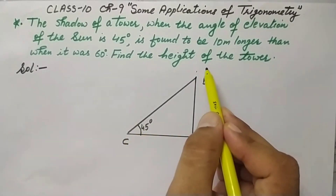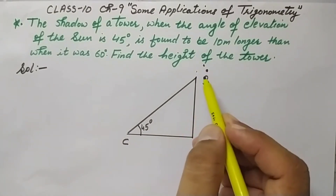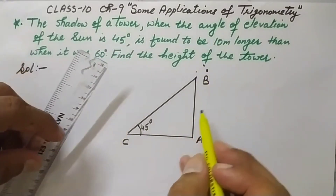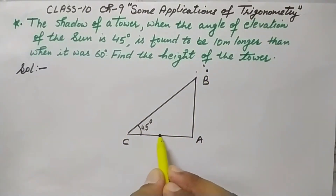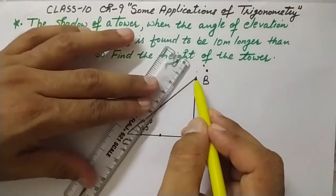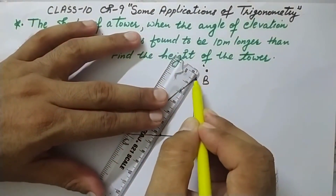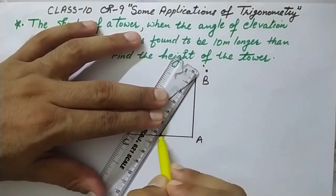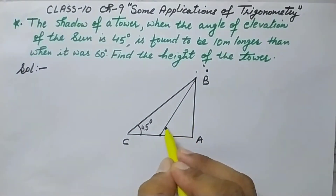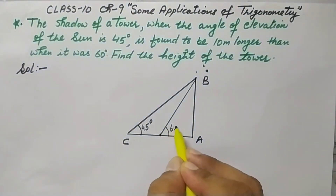When the sun rises higher, the shadow will be reduced. Suppose the shadow is now shorter here, and the angle of elevation has increased. Now the angle of elevation is given as 60 degrees.